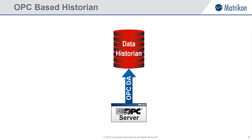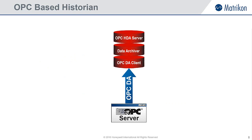So how does it work? Let's take a closer look at an OPC-based data historian. The OPC-based data historian contains three key components. Firstly, an OPC-DA client, which enables the historian to connect to OPC-DA servers in order to collect real-time data. The next piece is the archiver or core component, which is responsible for taking the collected data and storing it to disk. And lastly, an OPC-HDA server, which allows external OPC-HDA enabled tools to connect to the data archive and access the stored data.